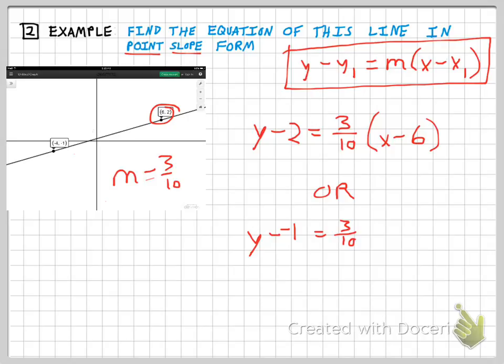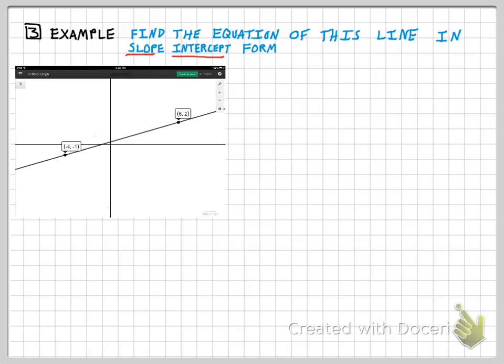Notice I have a different point, so I could have also chosen that one and I'd have y minus (-1) equals three-tenths times x minus (-4). Obviously when I have a double negative there I can change it to a plus, so y plus 1 equals three-tenths times x plus 4 is an alternative solution. We've got either that or that as the equation of this line.